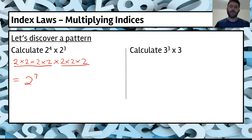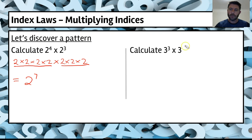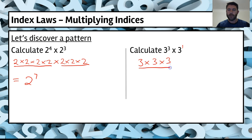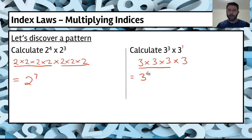Let's see if you can see what the pattern might start to be. Next, we're going to calculate 3 to the power of 3 times 3. If we've got a base with no index shown, we assume that it's index of 1 — any number without an index is to the power of 1. So 3 to the power of 3 equals 3 times 3 times 3, and we're multiplying that by one 3. After expanding, we count 1, 2, 3, 4 — we've got 3 to the power of 4.